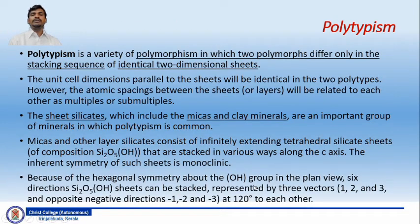Polytypism is a variety of polymorphism in which two polymorphs differ only in the stacking sequence of identical two-dimensional sheets. These are formed generally in sheet silicate minerals.